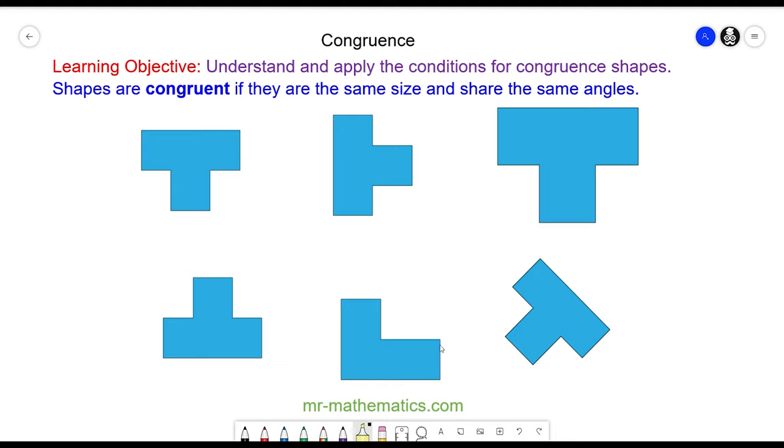Hello and welcome to our lesson on congruence. Congruence is another word for identical, and two shapes are identical or congruent when they share the same size and the same angles.